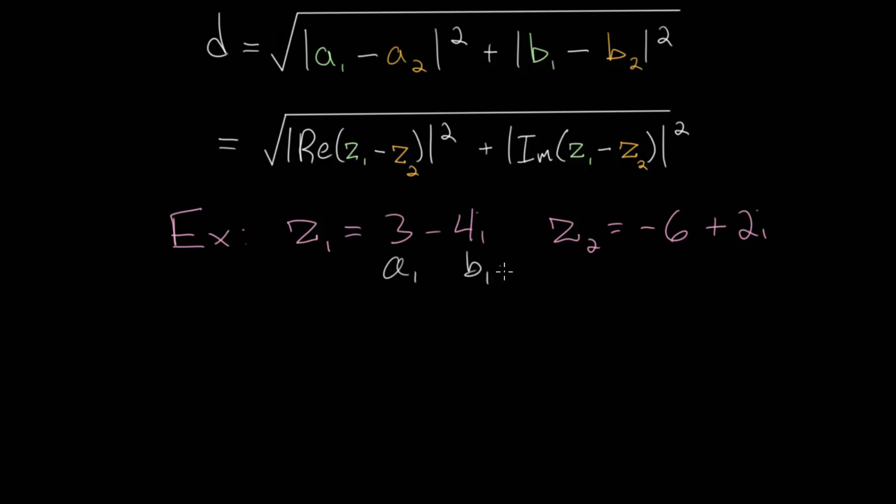So we could label these if we want. This is A1 and B1. That's minus 4 in this case. And A2 is minus 6, and B2 is 2. So the distance between these points is the square root of this expression here. We will find the absolute value of the difference between the real parts first. We can do 3 minus negative 6, and we'll square that.